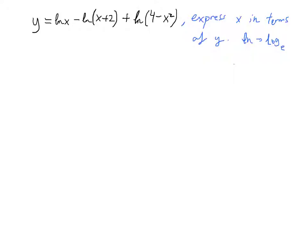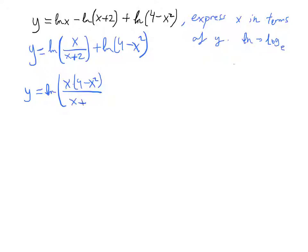Let's get started by using the laws of logarithms. Y is equal to the natural logarithm of x divided by x plus 2, plus the natural logarithm of 4 minus x squared. And I can put this together also like this: x times 4 minus x squared divided by x plus 2. There you go. That's pretty simple. Now, what else can I do now?